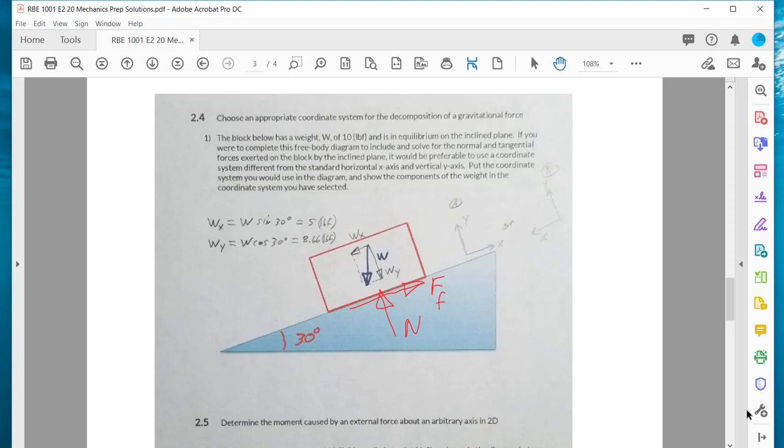Now we want to break the weight into two components. The Y component is going down, it's 8.66, just W cosine 30 degrees. And then the X component is down the plane and sine of 30 is just 0.5, so 10 times 0.5 gives you the 5 pounds.